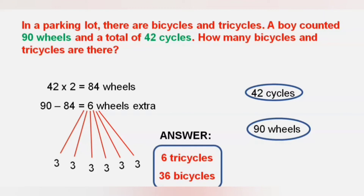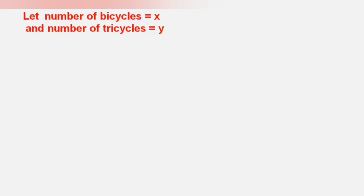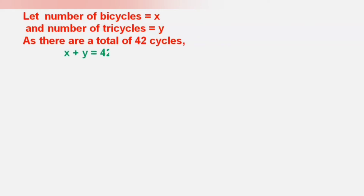This can also be done using the algebraic method. Let us take the number of bicycles as x and the number of tricycles as y. As there are a total of 42 cycles, we can write x plus y equals 42. Let us take this as equation number 1.